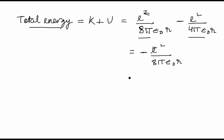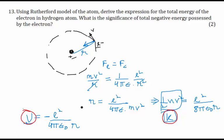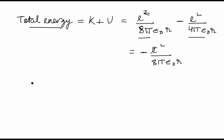The only concept we used is that the electrostatic force of attraction equals the centripetal force. From that we calculated the kinetic energy, the electrostatic potential energy, and therefore the total energy. All three energies are now in front of us.